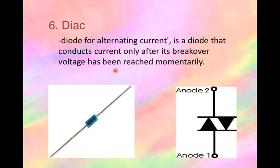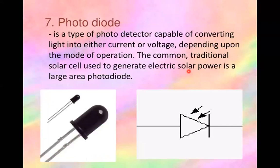A DIAC is a two-terminal, three-layer bidirectional device which can be switched from its off state to on state for either polarity of applied voltage. DIAC stands for Diode for Alternating Current. It is a diode that conducts electrical current only after its breakover voltage has been reached momentarily, and this behavior is bidirectional — the same for both directions of current.